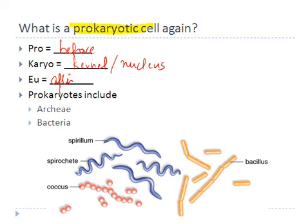The two main domains of prokaryotes are Archaea and Bacteria. Both are still being studied to divide into different kingdoms and classes. Bacteria are well known because they cause many diseases such as TB, tetanus, strep throat, and so forth. Not all bacteria are harmful to us — in fact, bacteria assist humans in many ways and only a small portion are disease-causing. We will explore bacteria further later on.